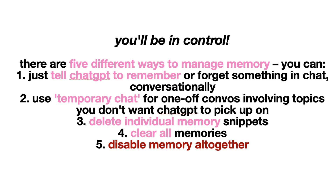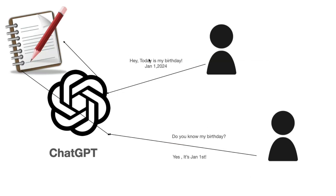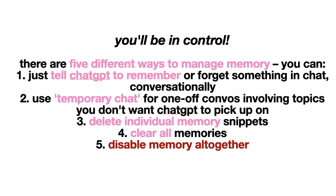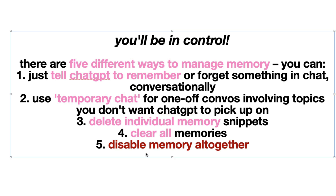The third thing you can do is delete individual memory snippets — all these things are individual memory snippets and OpenAI lets you delete them. The fourth option is you can clear all memories entirely — you just don't want to deal with them and get a clean slate. Finally, you can disable memory altogether if you think it is not good for you. OpenAI says these are the five different ways you will be in control of your own memory.